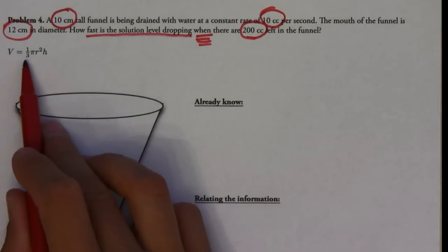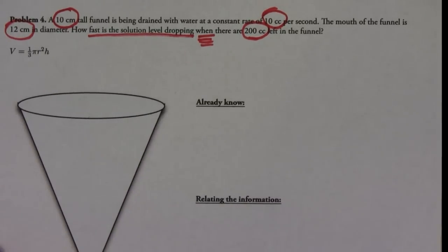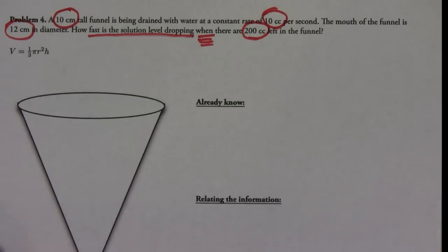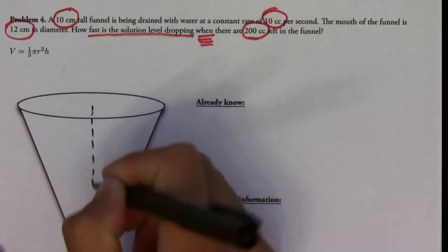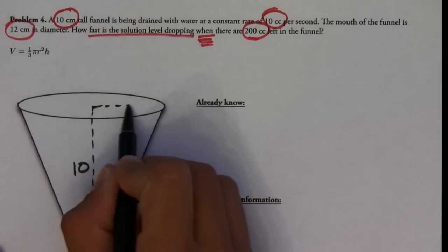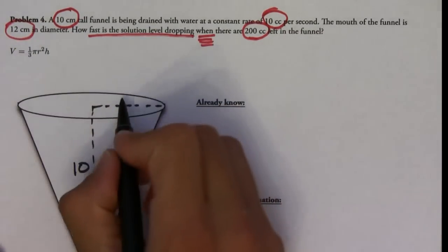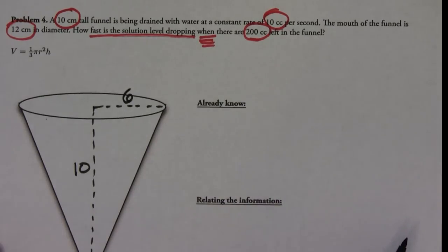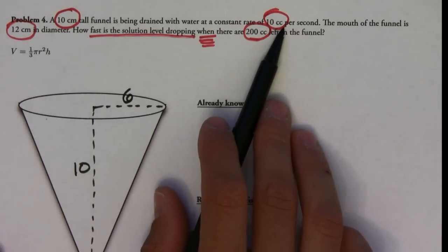Here we have the formula for the volume of a cone. Let me label the constants on the picture I already have. The funnel is 10 centimeters tall, so that's going to be constant — I'll label that as 10. The mouth of the funnel is 12 centimeters in diameter, which is also constant, so if the diameter is 12, then the radius is 6. Notice they're both in centimeters.